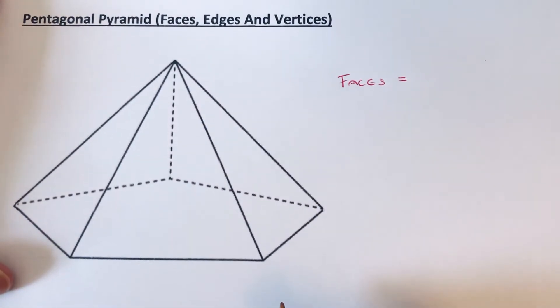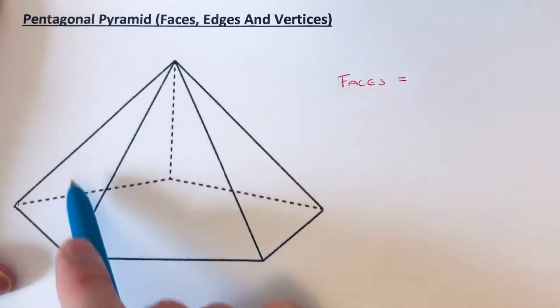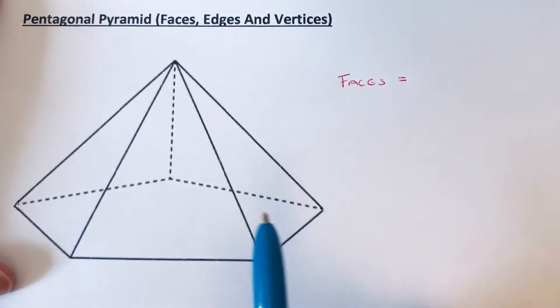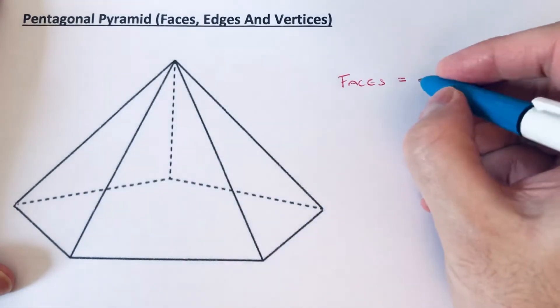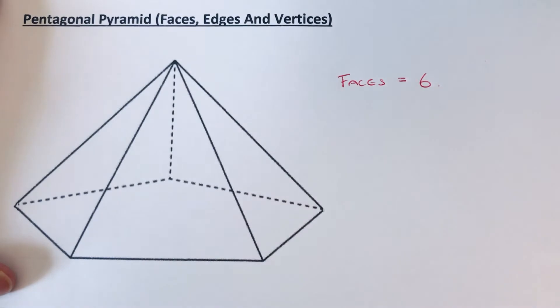So we've got a pentagonal face at the bottom there - that's one - and then we've got five triangular faces around the center of the pyramid. So that's altogether six faces.